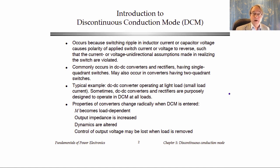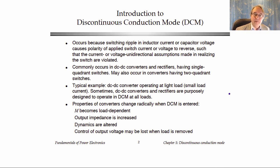When the discontinuous mode happens, the output voltage now becomes load dependent. In continuous mode, say for a buck converter, the output voltage is the duty cycle times the input voltage, and any dependence on load is small and only comes from losses. In the discontinuous mode, we have a first order dependence of the output voltage on the load current, so the properties of the converter change drastically.